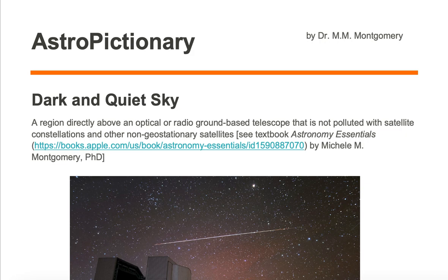A dark and quiet sky is a region directly above an optical or radio ground-based telescope that is not polluted with satellite constellations and other non-geostationary satellites.